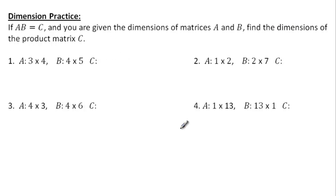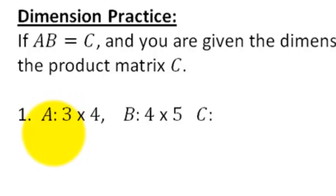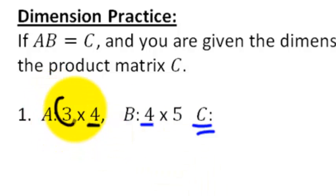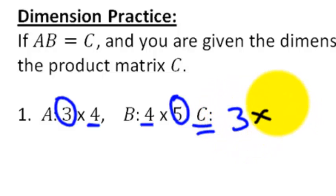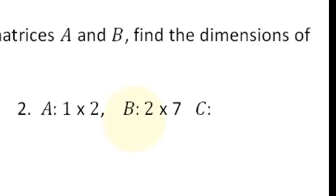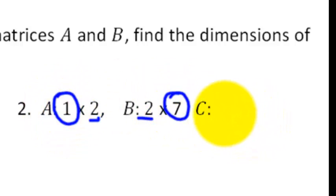For this practice, we're looking strictly at dimensions. The dimensions of matrix A and matrix B are listed. If we multiply A and B to get product C, what are the dimensions of the answer? If this is a 3 by 4 and a 4 by 5, we look at the middle — yes, you can multiply them, because those are the same. The answer is the outside: the dimensions of matrix C would be 3 by 5. Number two: can we multiply these? Yes, because the middle numbers are the same — the two and the two. Our answer would be the dimensions of the outside, so the dimensions of matrix C will be a 1 by 7.